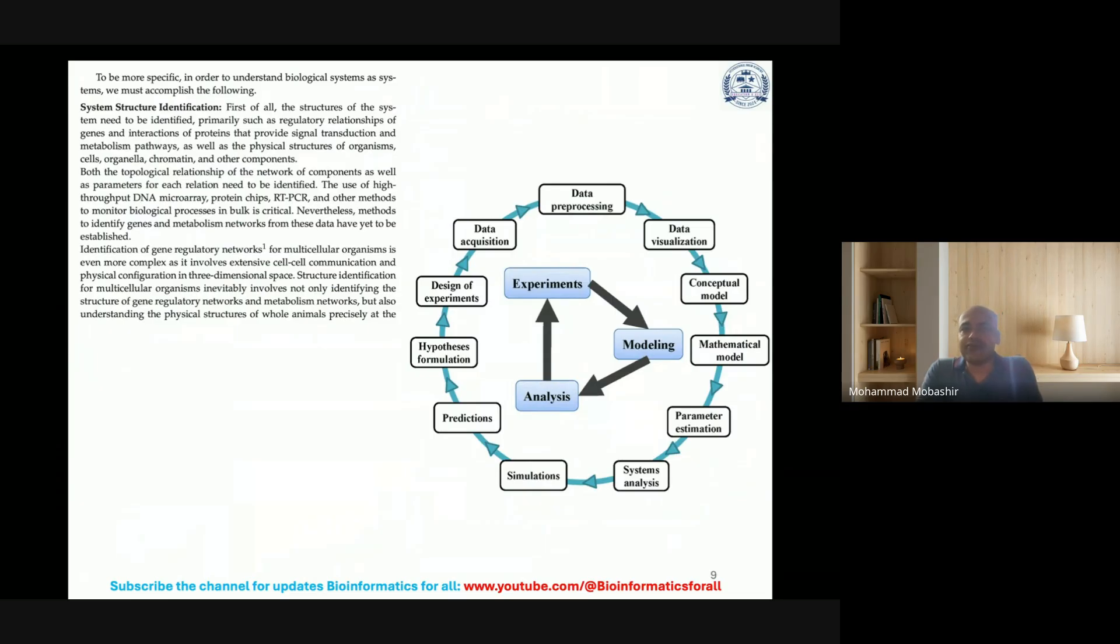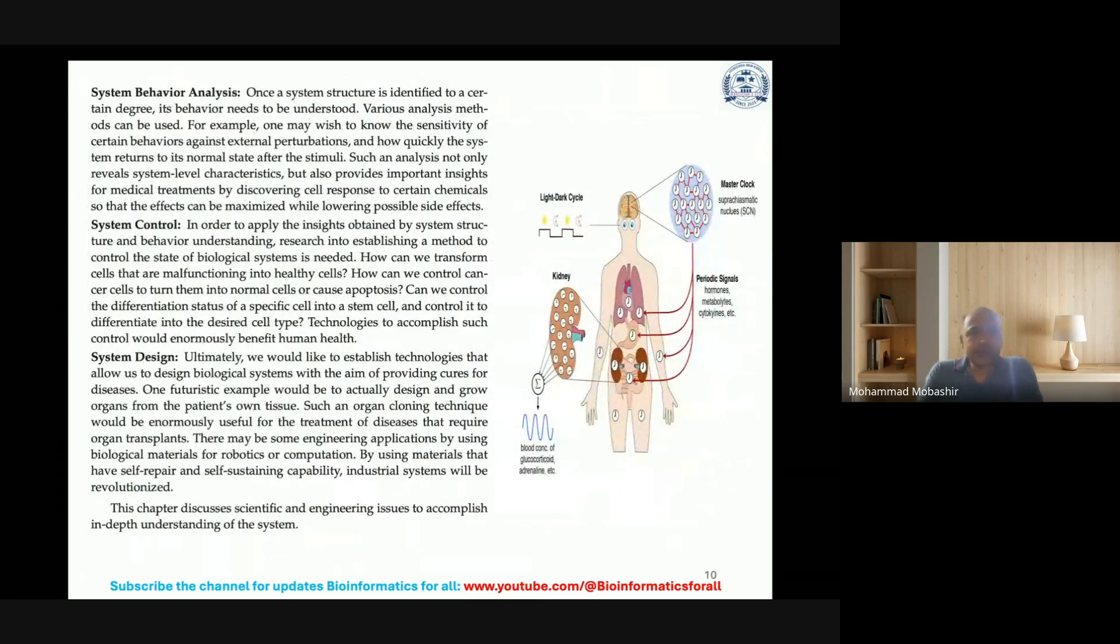The second point is system behavior analysis. Once a system structure is identified to a certain degree, its behavior needs to be understood. Various analysis methods can be used. For example, one may wish to know the sensitivity of certain behaviors against external perturbations, or how quickly the system returns to its normal state after stimuli. Such analysis not only reveals system level characteristics but also provides important insights for medical treatments.